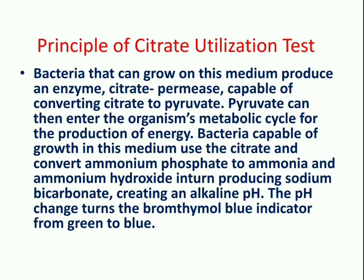Bacteria that can grow on this medium produce an enzyme called citrate permease that are capable of converting citrate to pyruvate. The produced pyruvate then enters the organism's metabolic cycle for production of energy. The bacteria then convert citrate into ammonium phosphate to ammonia and ammonium hydroxide, in turn producing sodium bicarbonate, which is alkaline in pH.